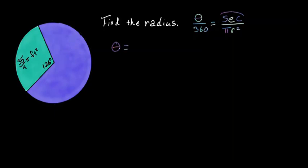Theta is equal to 126 degrees. Sector area is equal to 35 over 4 pi. Radius is unknown.